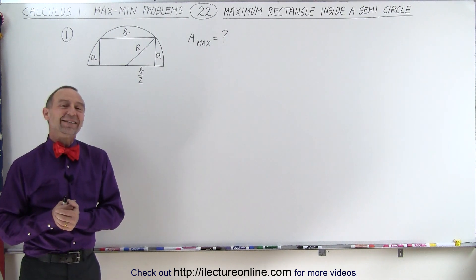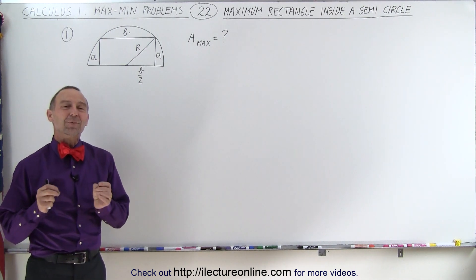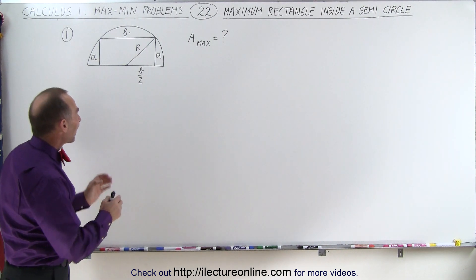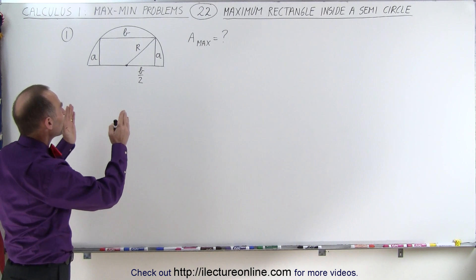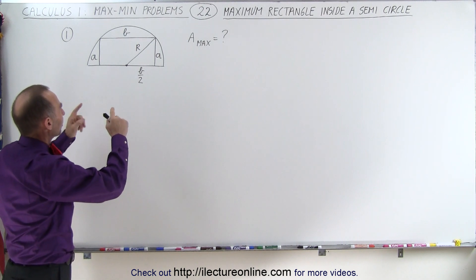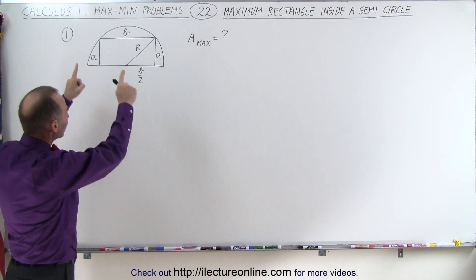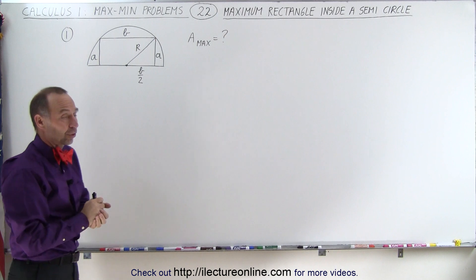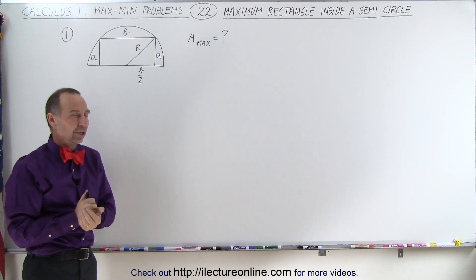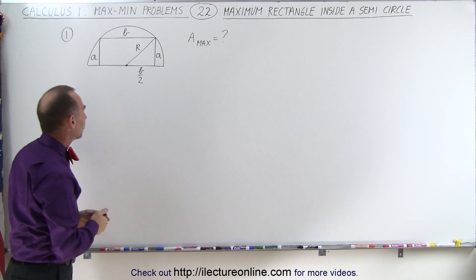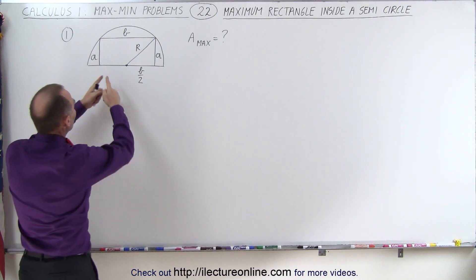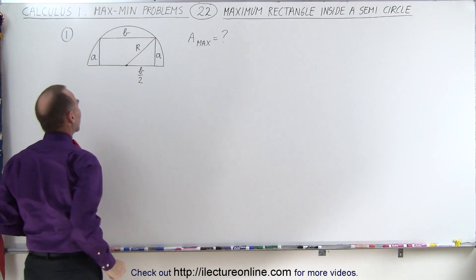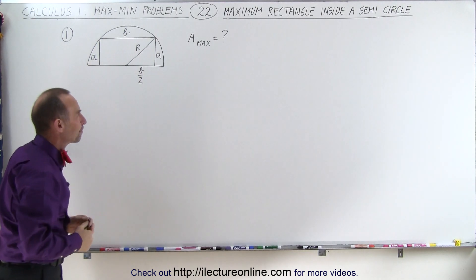Welcome to ElectronLine. The next problem asks us to find the maximum area of the triangle that fits inside a semicircle of radius R. You can see that the width of the triangle is B and the height of the triangle is A.